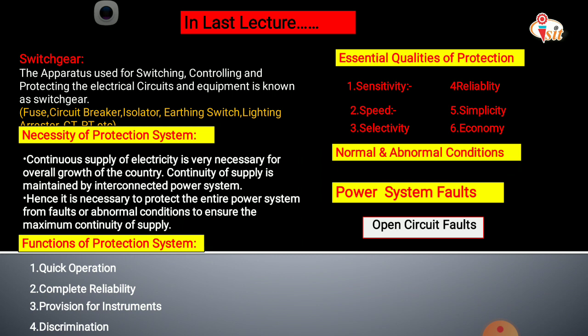Next we discuss the necessity of the protection system. We know that our power system goes from generation to transmission to distribution. This protection system should be protected by various switchgear equipment for the continuous supply of electricity, because industrial, commercial, irrigation, and traction applications all require continuous supply. Hence it is necessary to protect the entire power system from abnormal conditions to ensure maximum continuity of supply.